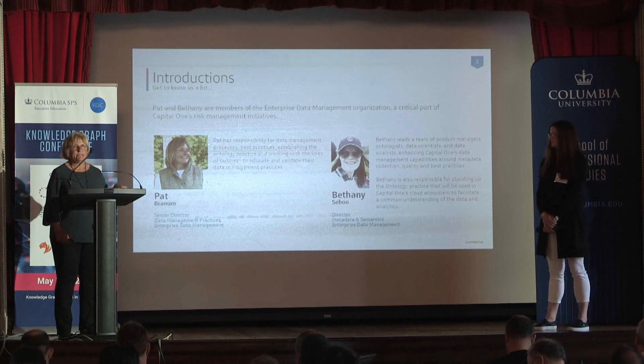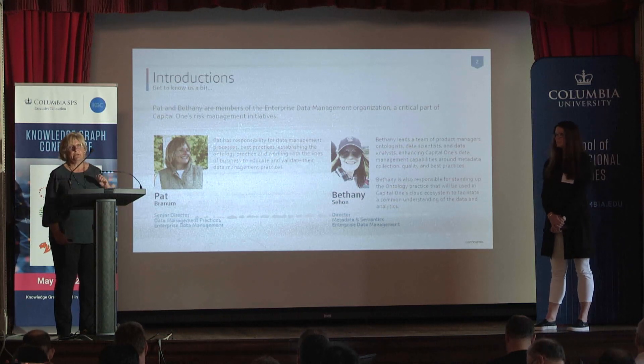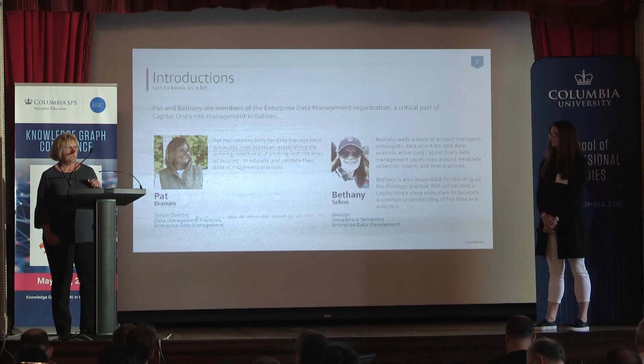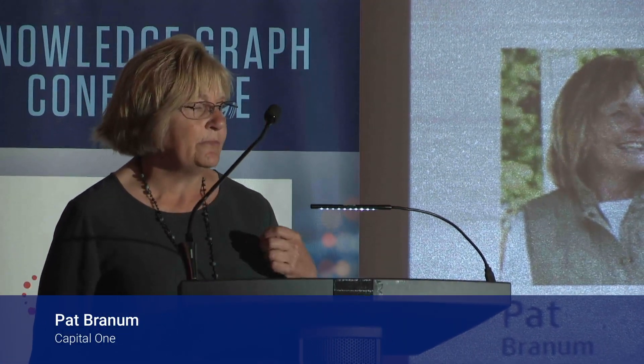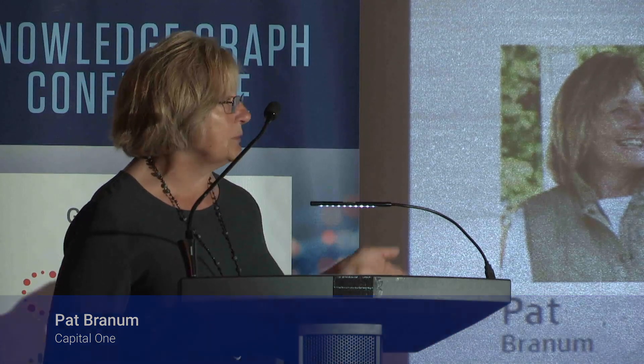We work with the lines of business — Capital One has probably eight or nine lines of business — to help them understand the requirements for managing their data. We serve as a second-line function that checks to make sure they are managing their data correctly. In this role, we work with the lines of business to bring in new capabilities that can be used across the book of business. And that's what we did here with the Knowledge Graph.